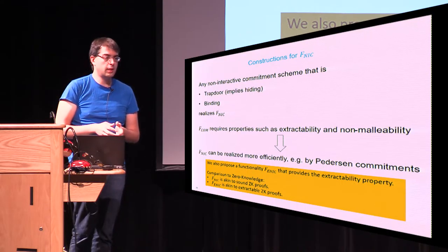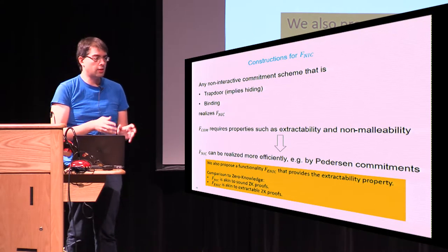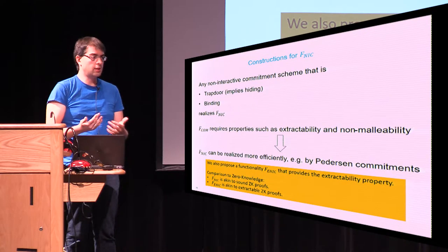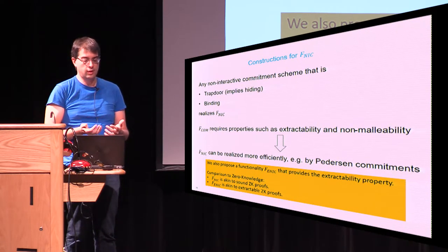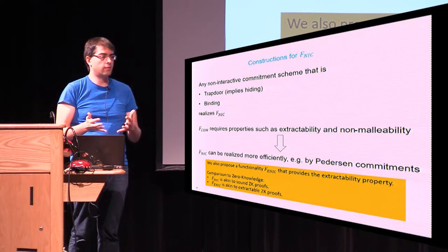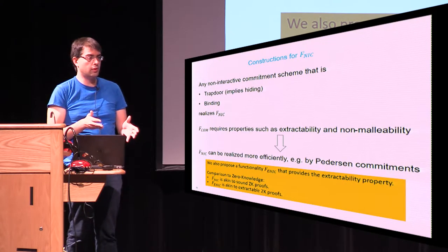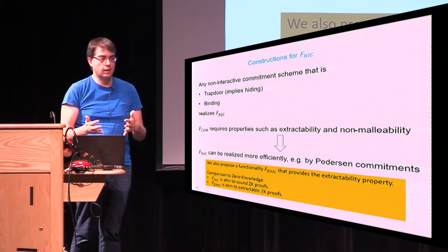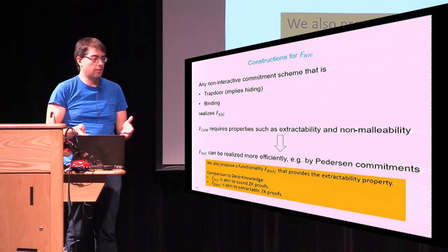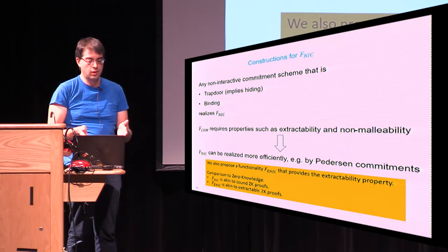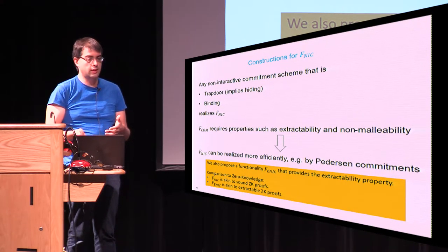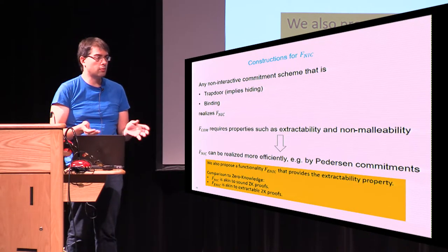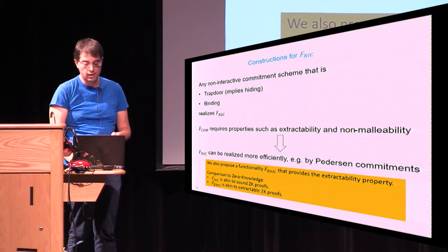We also propose a variation of our functionality that requires extractable commitments. The relation between these two functionalities, FNIC and FENIC, is analogous to the distinction between zero-knowledge proof functionalities that require soundness versus those that require extractability. In some cases you would use whichever one your protocol needs. In our example, FNIC suffices because commitments are always used alongside zero-knowledge proofs, which already provide the extractability property.